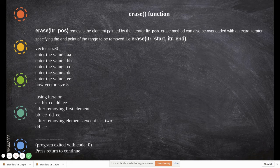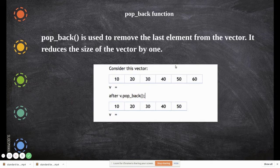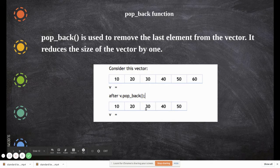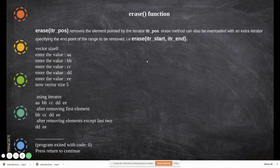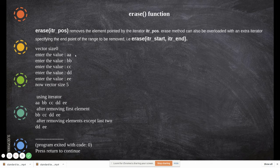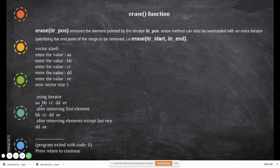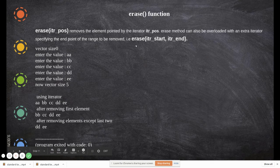The erase function removes the element pointed by a given position. While pop_back always removes at the back, if you want to remove an element at a specific position — for example element 30 — you use erase, specifying the position. Erase can take one or two arguments. In this example, the vector size is initially zero; we add five values, making size five. We print with an iterator, then remove the first element, and then remove all elements except the last two using the erase function.